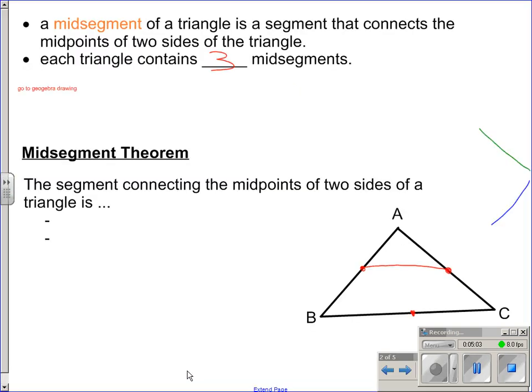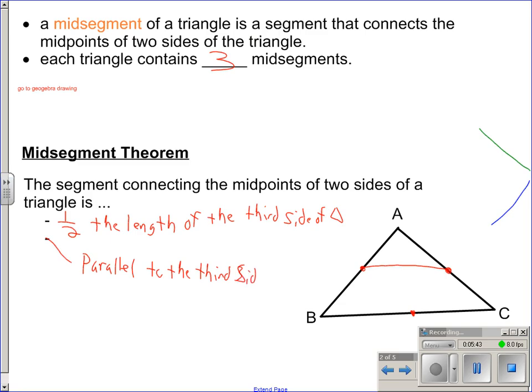So, let's go back to the notes. You've got two properties here. Midsegment theorem is what it is called. The segment connecting the midpoints of two sides of a triangle is half the length of the third side of triangle, and the midsegment is parallel to the third side of the triangle. Those are the two main properties here. It's the midsegment theorem. That midsegment, half the length of the third side, and it's also parallel to the third side.